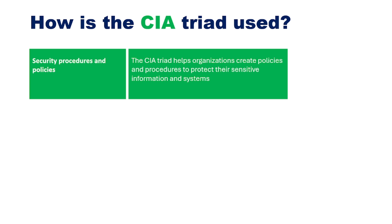So how is the CIA Triad used? In most organizations, your security leadership team will first want to set your information security policies and thereafter your security procedures. When someone is starting on a blank slate, they would want to create the policies based on confidentiality, integrity, and availability. The CIA Triad helps organizations plan their policies and procedures to protect sensitive information and systems.